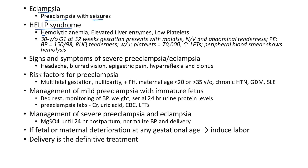Clinical case of HELLP syndrome: 30-year-old primigravida at 32 weeks presents with malaise, nausea, vomiting, and abdominal tenderness. BP is 150/98, right upper quadrant tenderness. Workup shows platelets 70,000 cells/mm³, elevated liver function tests, and peripheral blood showing hemolysis — this is HELLP syndrome. Signs and symptoms of severe preeclampsia/eclampsia include headache, blurred vision, epigastric pain, hyperreflexia, and clonus.